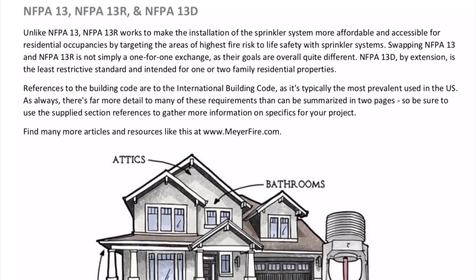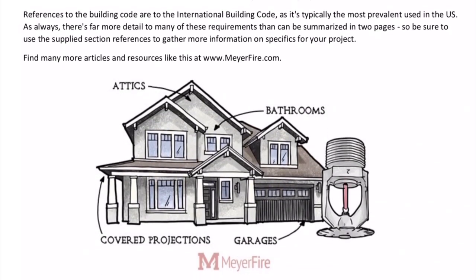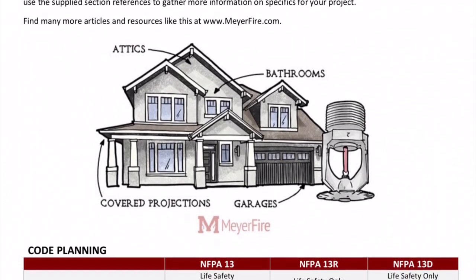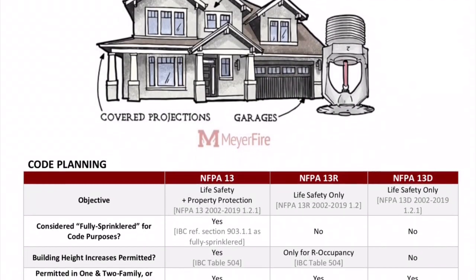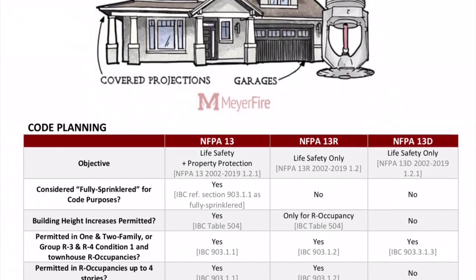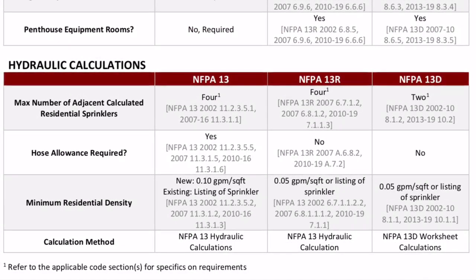Unlike NFPA 13, 13R works to make the installation of the sprinkler system more affordable and accessible for residential occupancies by targeting the areas of highest fire risk to life safety with sprinkler systems. Swapping NFPA 13 and 13R is not simply a one-for-one exchange, as their goals are overall quite different. NFPA 13D, by extension, is the least restrictive standard and intended for one- or two-family residential properties. References to the building code are to the International Building Code, as it's typically the most prevalent used in the U.S. As always, there's far more detail to many of these requirements than can be summarized in two pages, so be sure to use the supply section references to gather more information on specifics for your project.